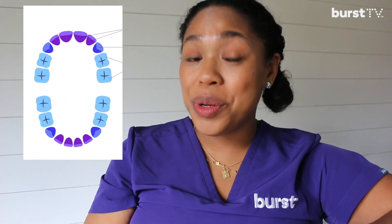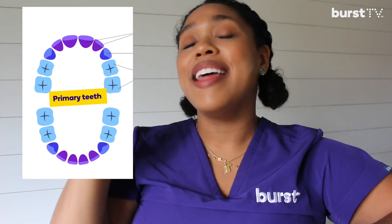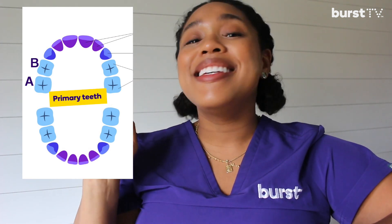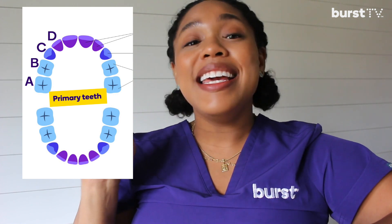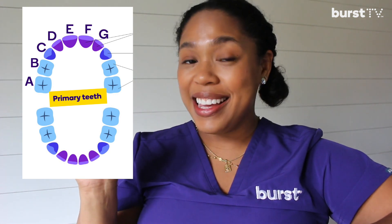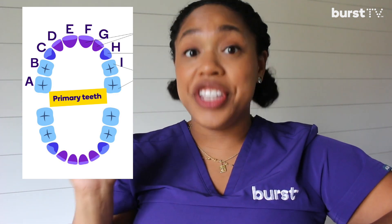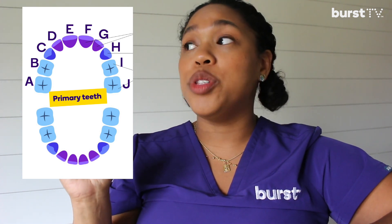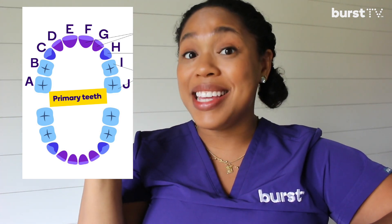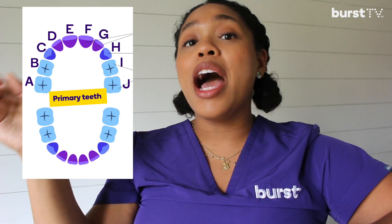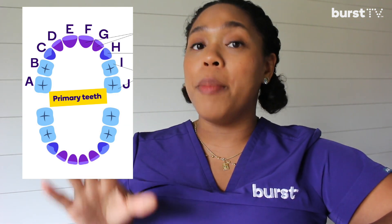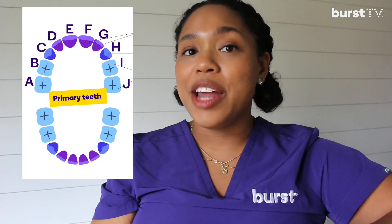Starting on the very last tooth on the upper right, we begin: A, B, C, D, E, F, G, H, I, J — and J is the last tooth on the top. So you have a total of 10 teeth on the top.